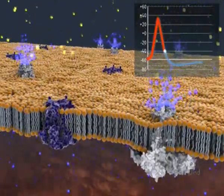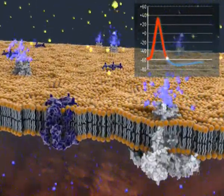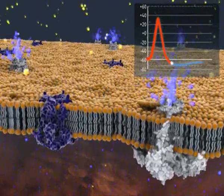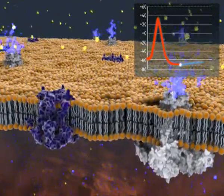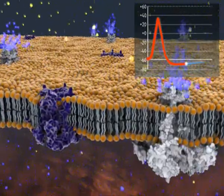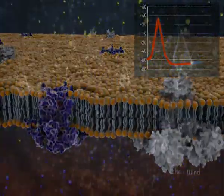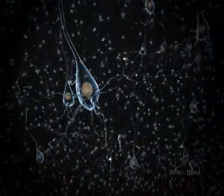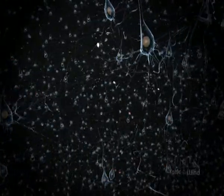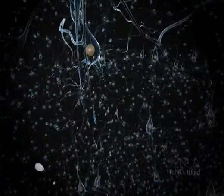After an action potential, the voltage-sensitive sodium channels stay temporarily inactive, in what is called the refractory period. This ensures that action potentials are propagated unidirectionally, from the cell body to the axon terminus.